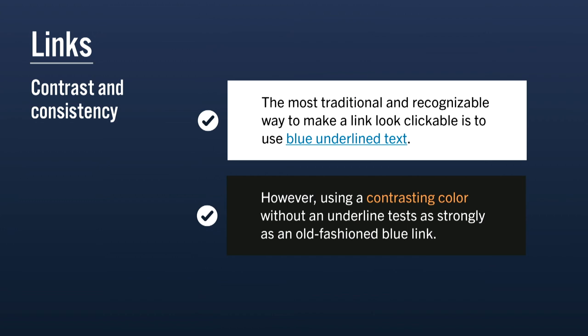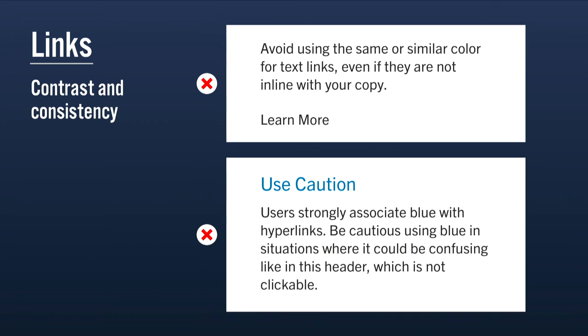White space is also an effective way to communicate figure-ground relationships — putting a lot of space around a button or using a faded background image to clarify what's a background element. For computer-native signifiers like links, contrast and consistency are key. The most recognizable way is blue underlined text, but using a contrasting color without an underline is still very effective — actually a result of that Nielsen Norman eye-tracking study. Contrasting color links work basically just as well as old-fashioned blue underlined links, which is good because many websites now use that pattern.